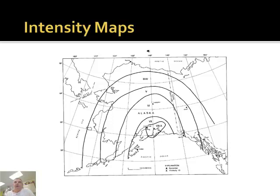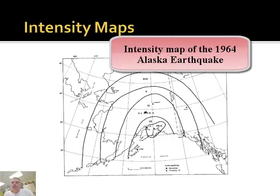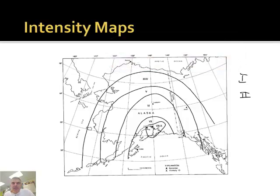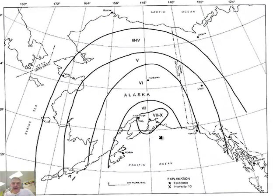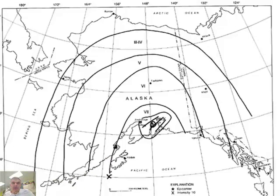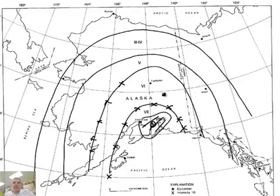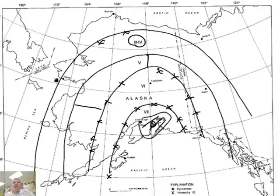Now let's talk about an intensity map. This is an intensity map of the 1964 earthquake in Alaska. Using the Roman numeral system, here we have an 8 to 10 right near the epicenter. Like a contour map, the worst intensity was closest to the epicenter. Areas along the same contour line felt the earthquake equally. Scientists determine this by interviewing people about what they felt and what happened to buildings. The intensity bands aren't perfectly circular because of variations in soil composition and land type — areas of 3 and 4 intensity extend further out.